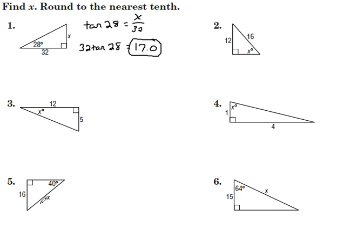Skip down to number 5. We're dealing with this angle measure here, 40. 16 is opposite, and x is the hypotenuse this time. So that goes with the sine, opposite over hypotenuse. The sine of 40 degrees is equal to 16 over x.